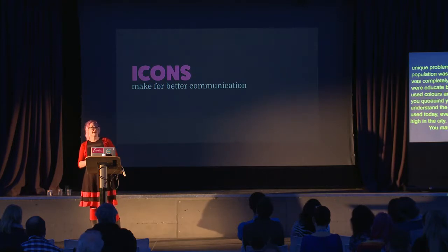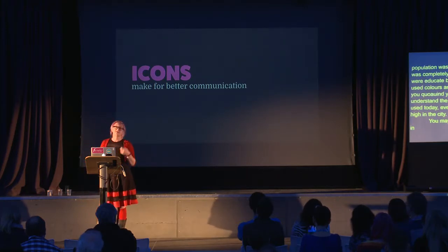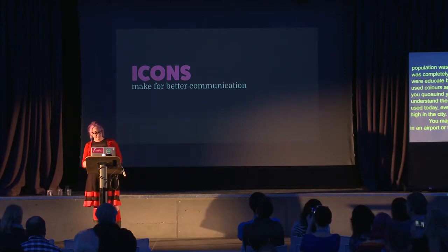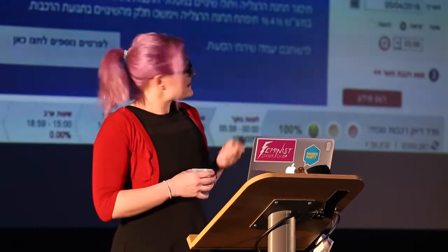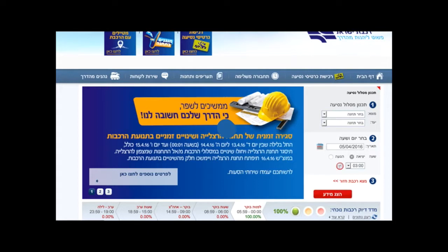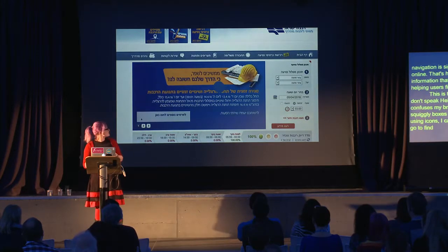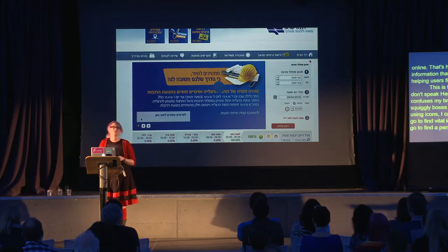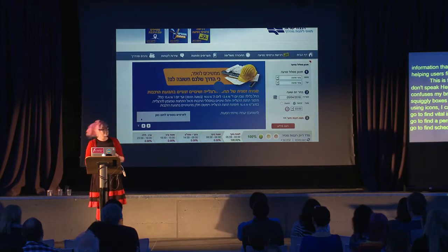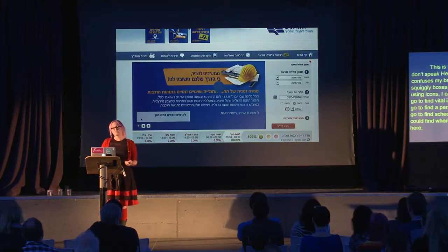You may not be designing wayfinding in an airport or helping illiterates navigate a metro system, but website navigation is kind of just like wayfinding online — that's how people find their way to the information they need. This is the Israel Railways website. I don't speak Hebrew; it runs right to left, which confuses my brain. But because they're using icons, I can sort of understand where to go to find vital information — where to find a person to talk to, where to find schedules, and I'm fairly certain I could find where to buy tickets.